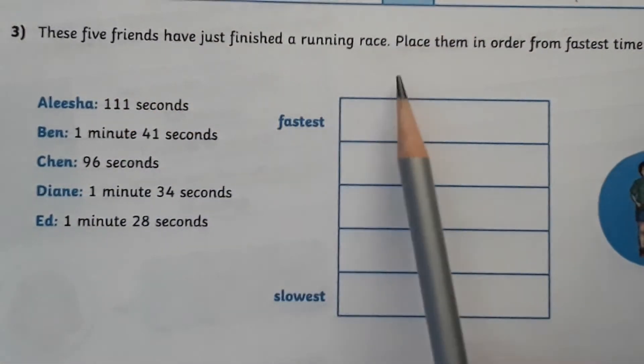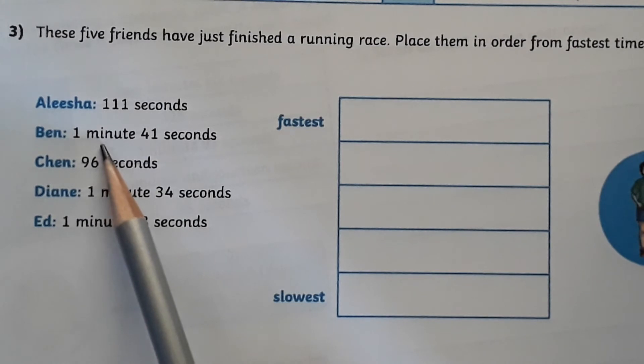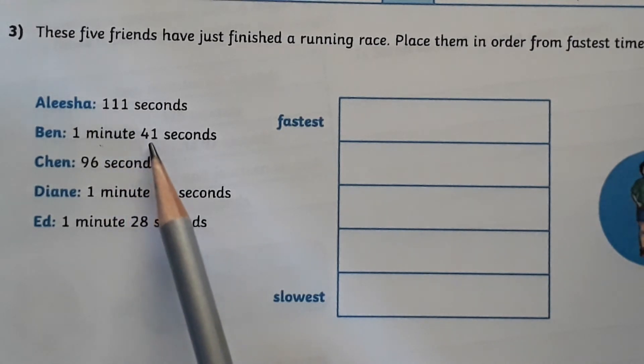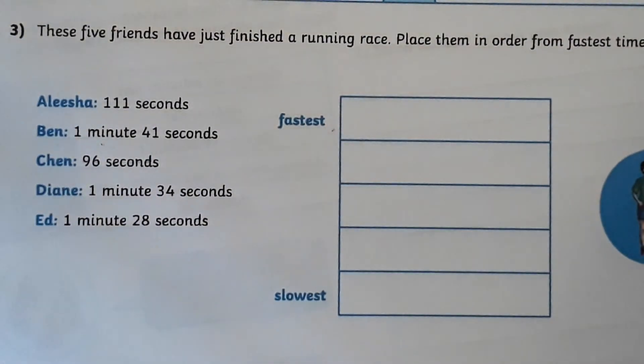These five friends have just finished a running race. Place them in order from the fastest time to the slowest time. They've done some of the times in seconds and some of the times in minutes and seconds, so you need to convert. I think it's probably easiest to convert the minutes and seconds into seconds. So we know 60 seconds in a minute, so add the 41 seconds to find how long it took Ben, and then you've got to order them. Once you've converted all the times into seconds, you'll be able to compare them. The person who went slowest will have the greatest number of seconds.